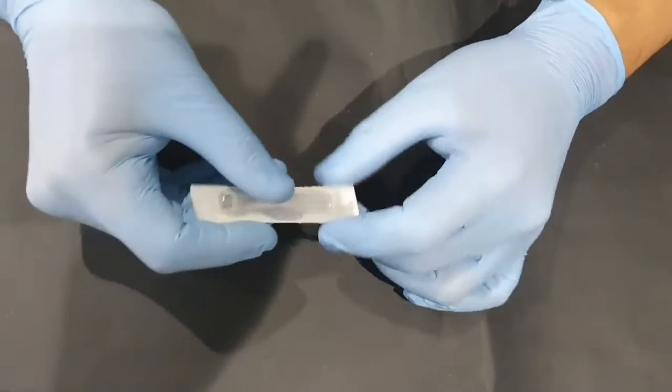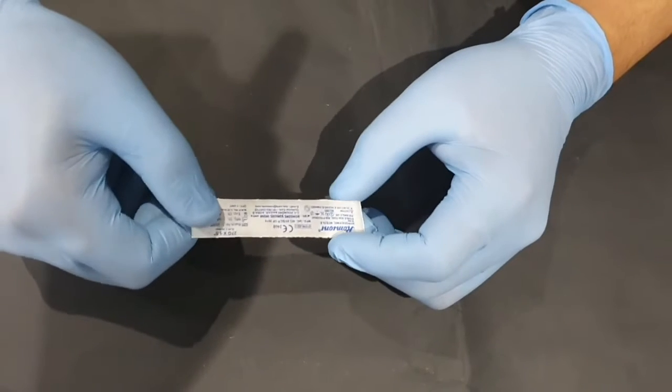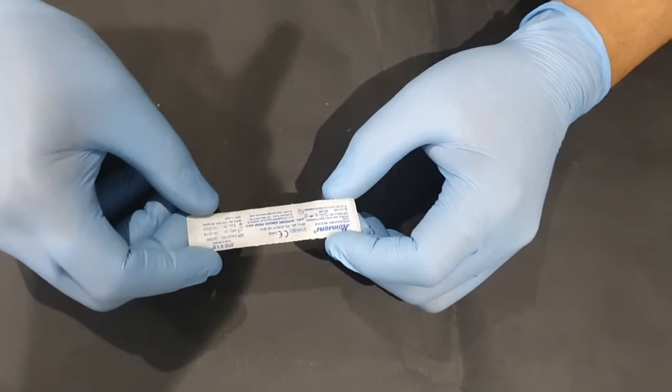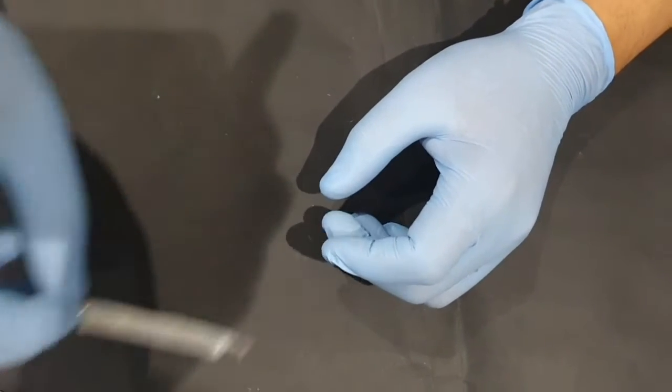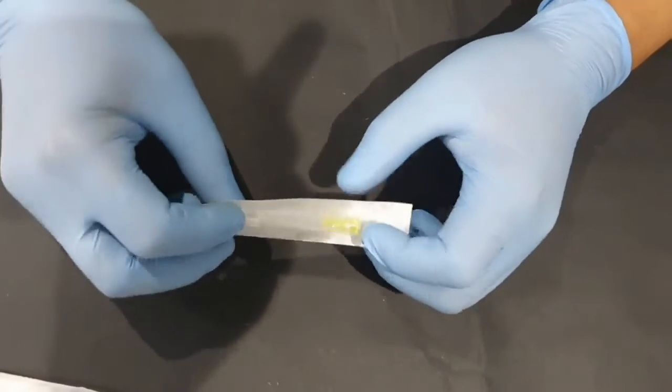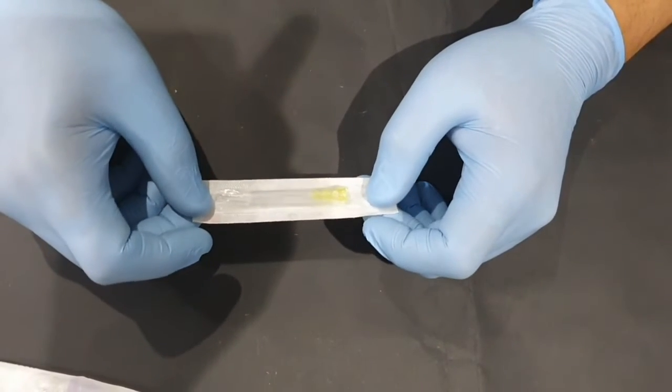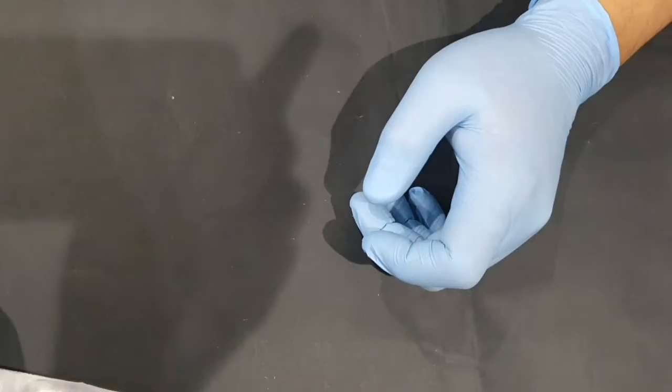The second one is the typical needle that we use for delivering anesthetic solutions. This is also a beveled needle and it's a 27 gauge needle. The third one that we have is a side-vented 30 gauge irrigation needle which is designed specifically for delivering irrigant solutions.